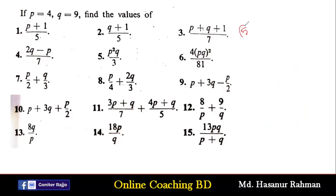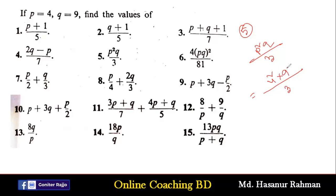Now number 5 says p²q/3. Instead of p we put the value 4, multiplied by q which is 9, divided by 3. We divide 9 by 3 to get 3, and 4 squared is 16, so 16 multiplied by 3 equals 48.